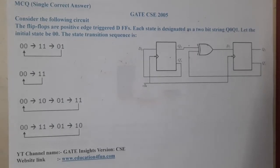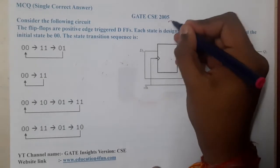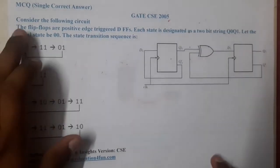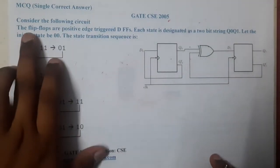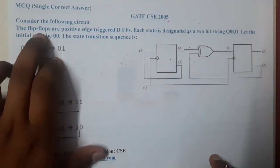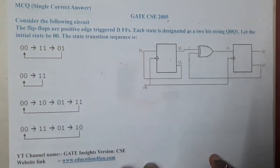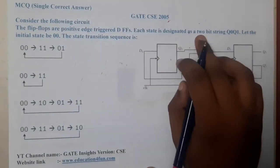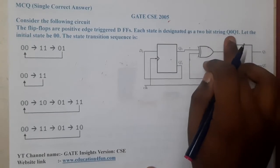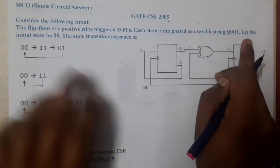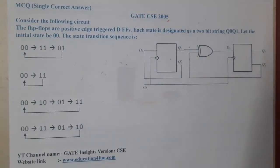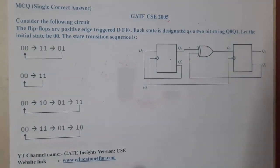Hello guys, we are back with our next lecture. In this lecture, let us go through the next question. This question belongs to GATE CSE 2005. The question is: consider the following circuit. The flip-flops are positive edge-triggered D flip-flops. Each state is designed as a two-bit string Q0Q1. Let the initial state be 00. The state transition sequence is...